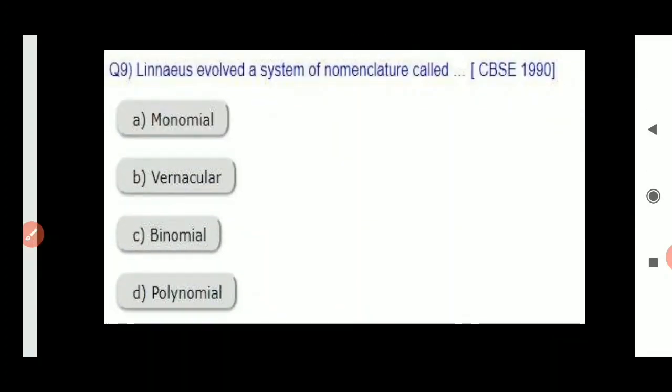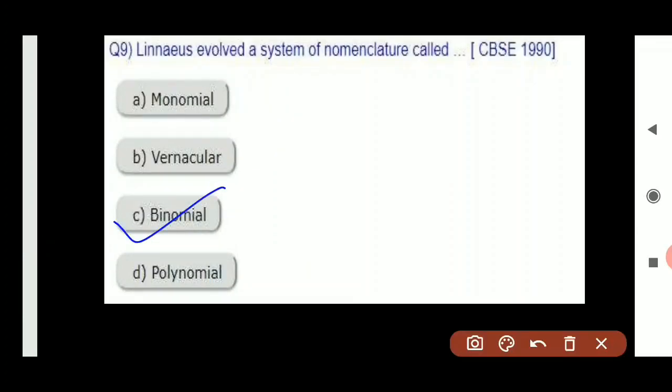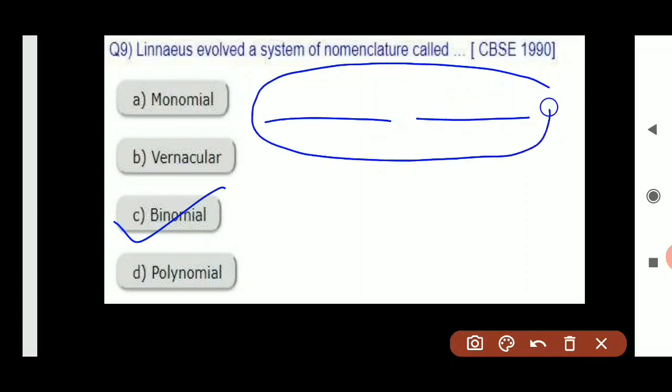Next question: Linnaeus evolved a system of nomenclature called — options are mononomial, vernacular, binomial, polynomial. Three of these options you have not studied at all. You have only studied binomial nomenclature, in which the name has two parts. This binomial nomenclature technique was given by Carolus Linnaeus.